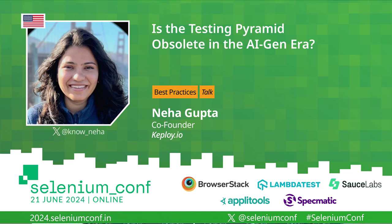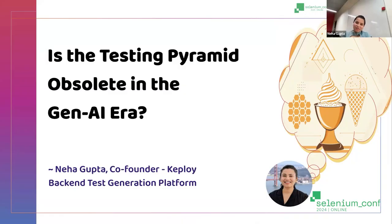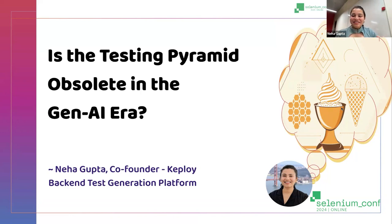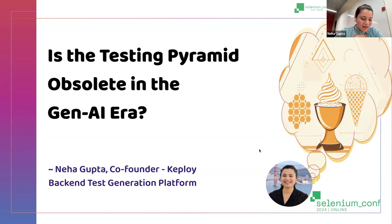Hello and welcome to this session: 'Is the Testing Pyramid Obsolete in the AI Agent Era?' by Neha Gupta. We're going to talk about different aspects of the testing pyramid and testing strategies. There were many shapes introduced, inspired by the testing honeycomb and testing ice cream cone, and we're going to talk about all of those and how things are changing in this generative AI era.